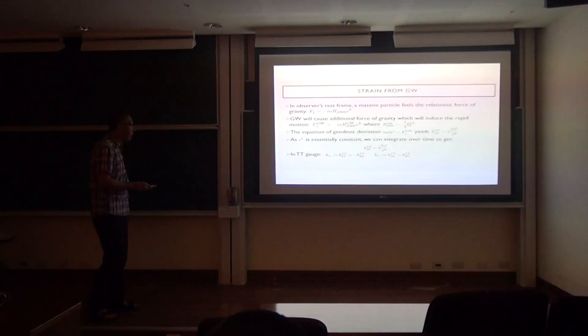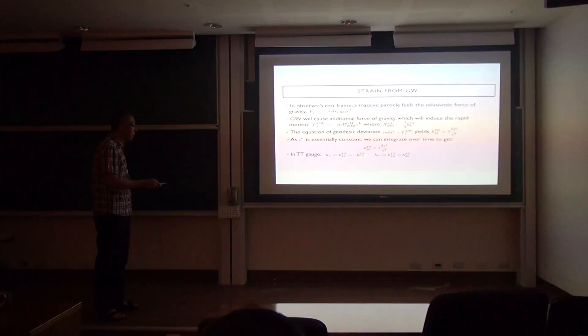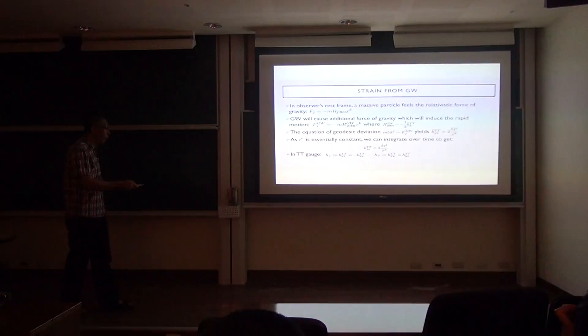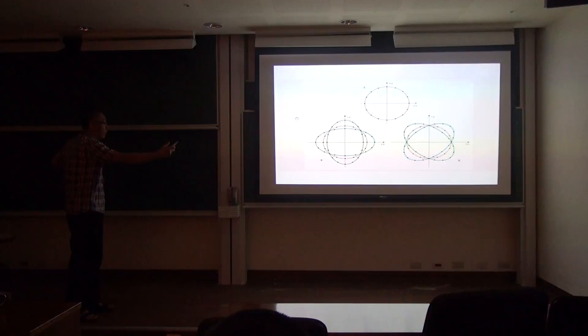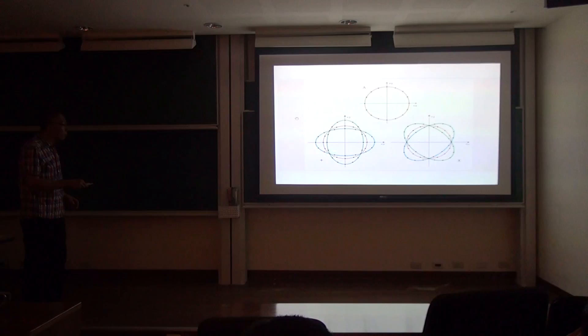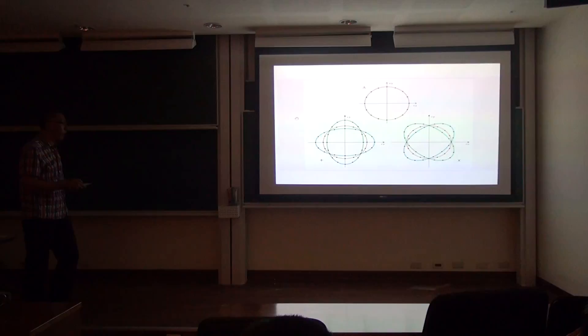In TT gauge there are two polarization modes: h₊ and h×. A ring of test masses deforms into an ellipse aligned with the x–y axes for h₊, or rotated 45° for h×. LIGO uses a Michelson interferometer to measure this displacement — when the mirrors move, the interference pattern shifts between constructive and destructive, and the change in photon count reveals the displacement.